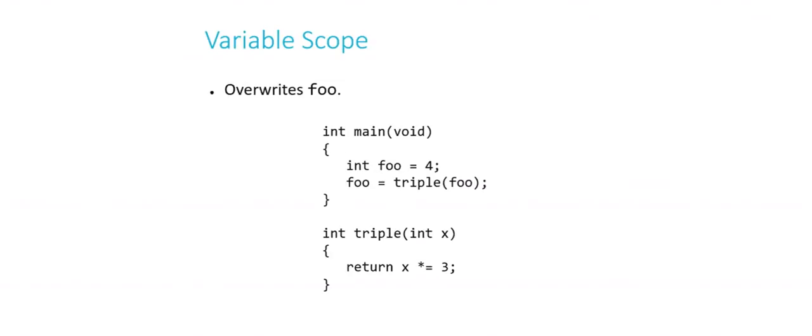Here, though, a very subtle difference, this does have the effect we want. Do you see why? We're overwriting foo in main this time. So int foo equals 4, foo equals triple foo. When we make that call, triple gets its own copy of foo, its own copy of 4.